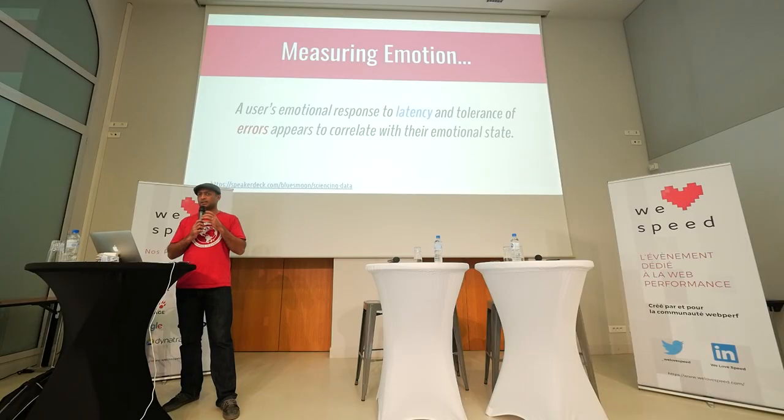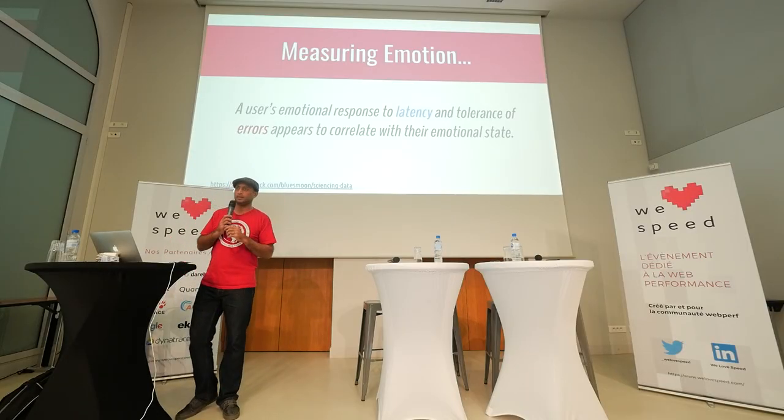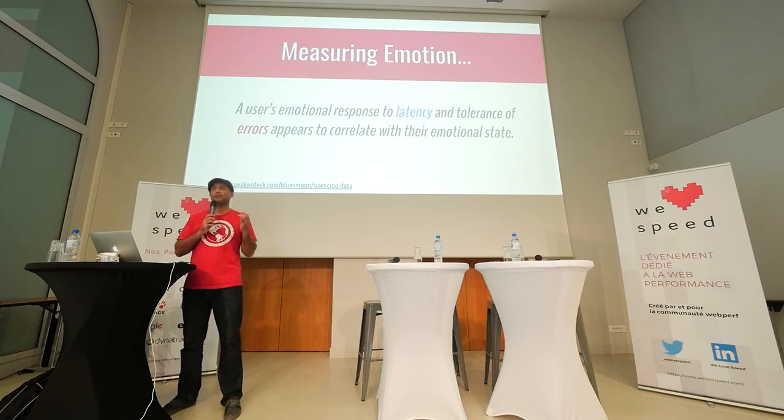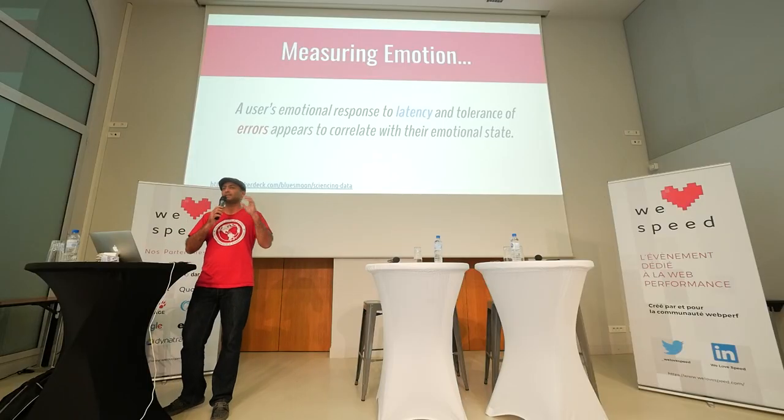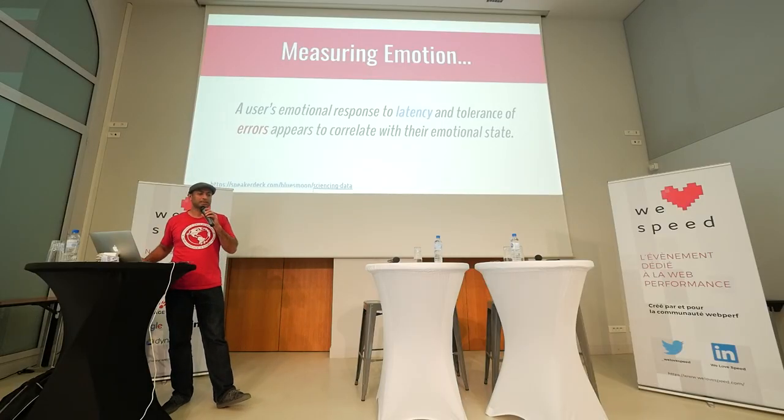We started out trying to figure out how to measure emotion. It turns out a user's actual emotional state affects how they browse your site — whether caused by offline activities or by the site itself. We measured this by looking at a sporting event and comparing real-time activity of the sport with how people were browsing the site, and seeing how they reacted to performance degradation and errors. Every time a particular team did really well, users from that country became very tolerant of errors, and if their team was doing badly, they became non-tolerant and started leaving the site.